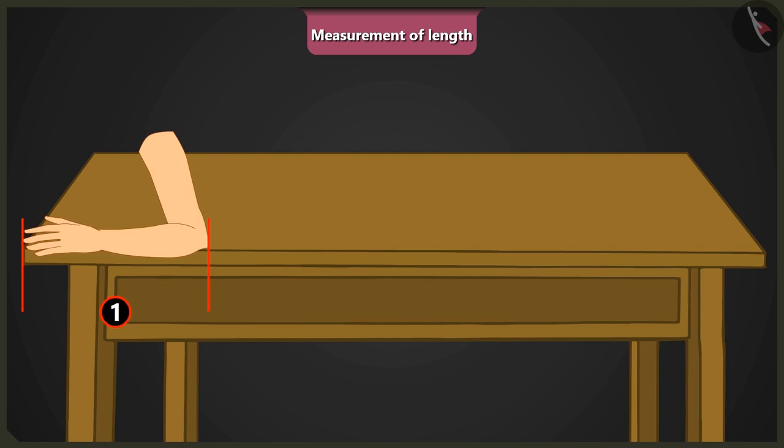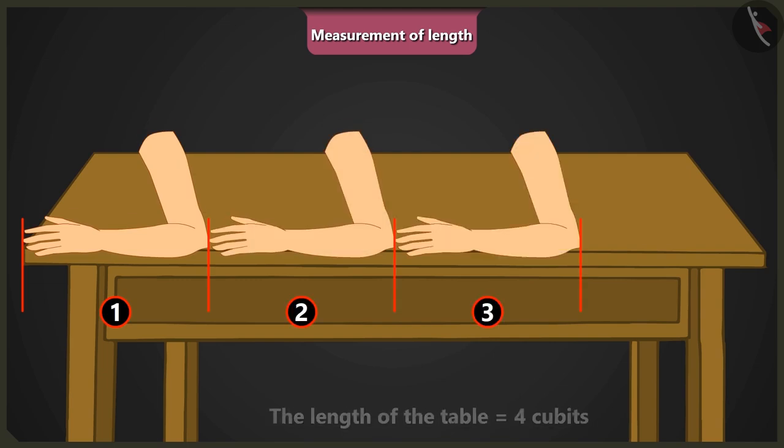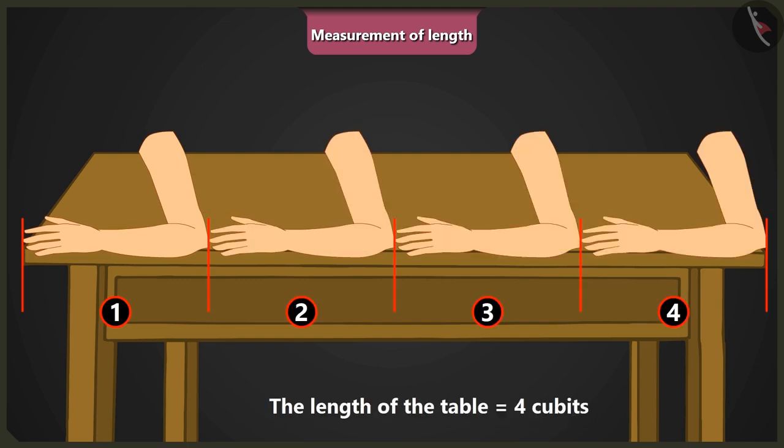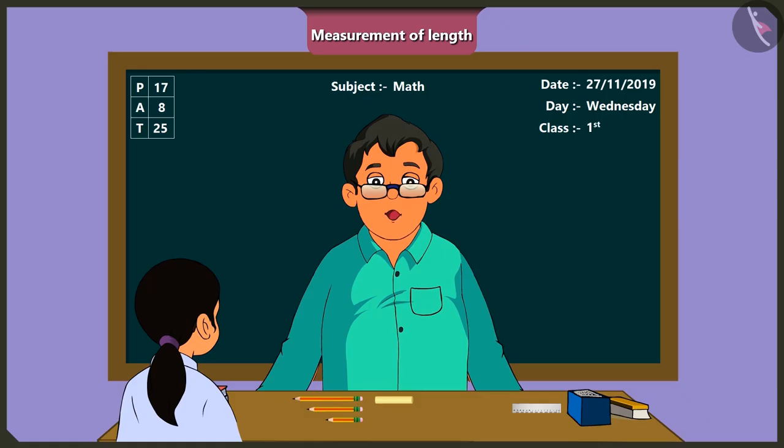The length of this table is one, two, three, and four cubits of my arm. That's right. Can you tell me why this happened? Yes sir.